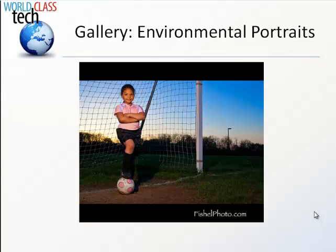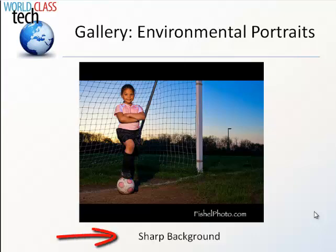Let's take a look at some environmental portraits. Here's a great example of a young soccer player. You can see that background is included — we know she's a soccer player because of the net, the goal, her uniform, and the ball. One important technique to point out: notice the use of a sharp background. Remember, in traditional portrait photography we usually had a blurry background. That's not the case in environmental portraiture. You want a sharp background because that background is an important part of the picture, telling the story about the person.